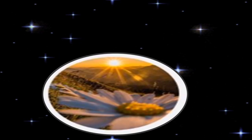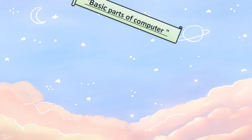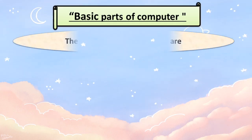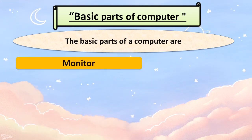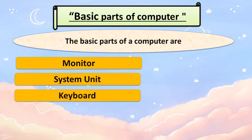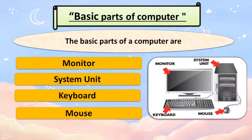Assalamu Alaikum, welcome back to my channel. Today my topic is the basic parts of a computer. The basic parts of a computer are: the first one is monitor. The next is system unit, keyboard, and mouse. Everyone read with me: monitor, system unit, keyboard, and mouse.